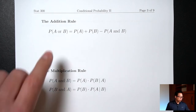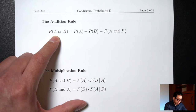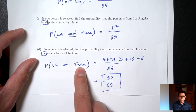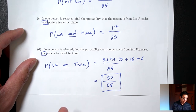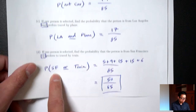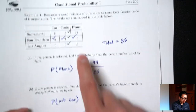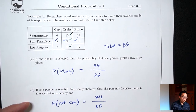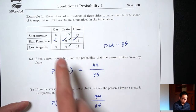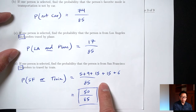We already know how to find OR probabilities without using a formula at all. In the last lecture, for something like probability of San Francisco OR train, we started by taking all the San Francisco numbers — 5, 9, 15 — then added on the train numbers without counting anything twice. We only added 15 and 6 because the 9 was already counted.